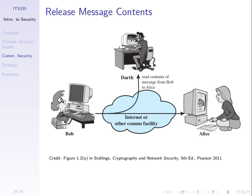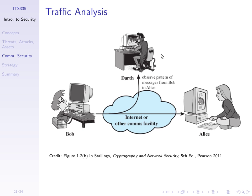We've gone through some of the concepts of computer and network security and looked at six different attacks on network or communication security. The first is releasing the message contents — intercepting other people's data and seeing it when you're not authorised to. The second is traffic analysis: analysing communication patterns, so not necessarily looking at the data but looking at how often you send messages, who you send to, what times you send them, and from that inferring other information.